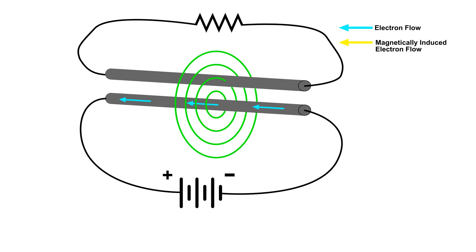Now the magnetic field has reached its maximum and has stopped moving. Notice that there is no current in the wire at the top. That's because to induce a current with a magnetic field in a wire, either the magnetic field has got to be moving, or the wire has got to be moving through a magnetic field.